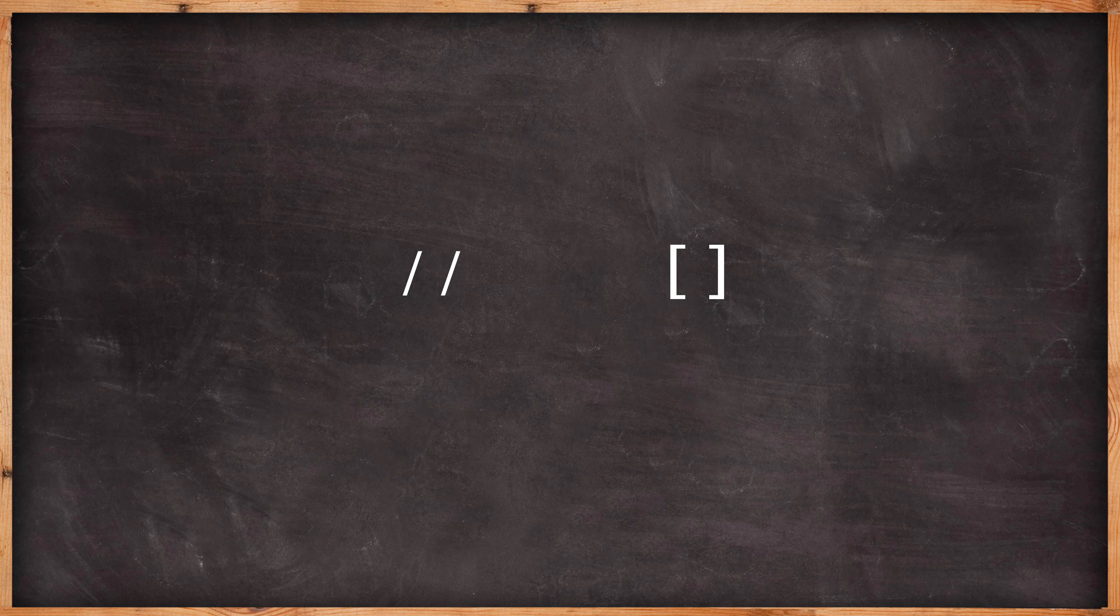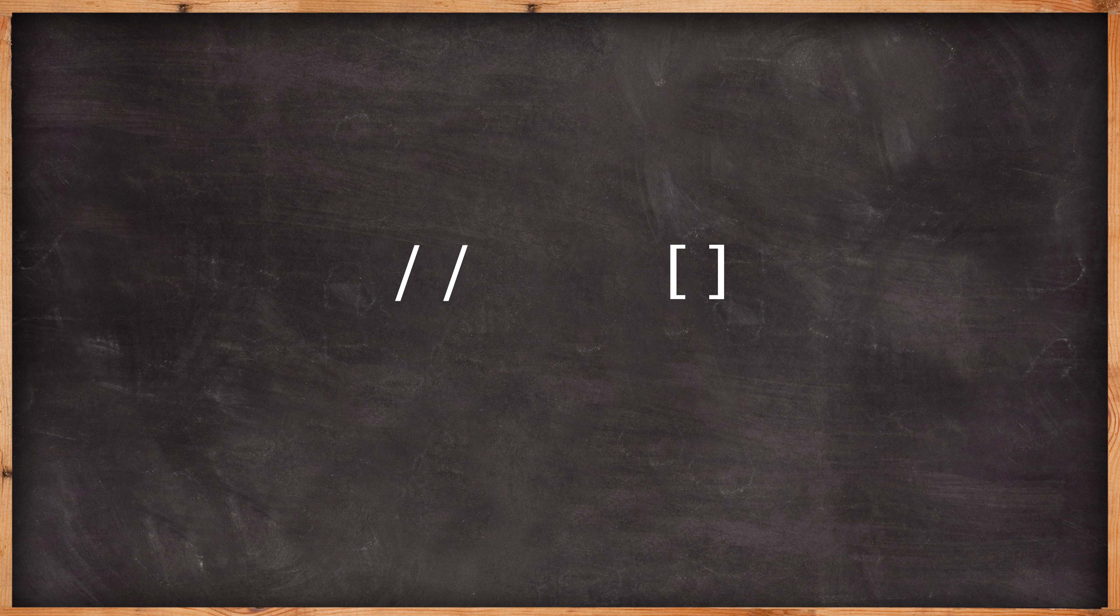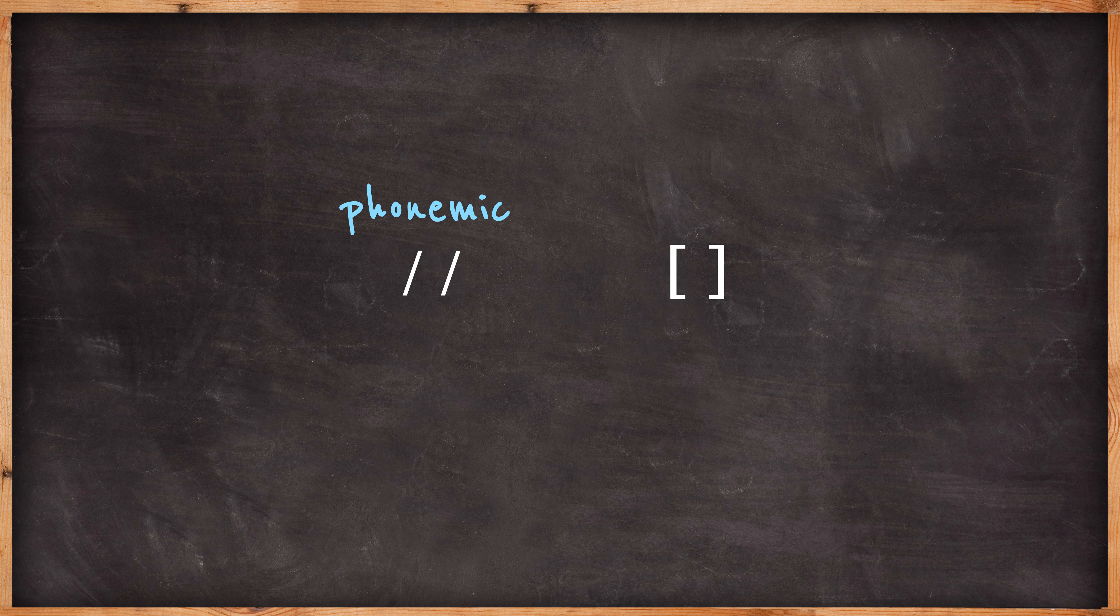Today I'm going to explain the difference between these two different ways of transcribing speech. On the left we have slanting lines for a phonemic transcription, and on the right we have square brackets for a phonetic transcription.